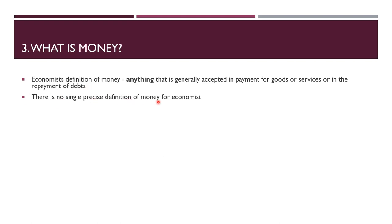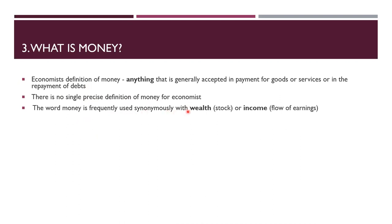There is no single precise definition for money for economists. The word money is frequently used synonymously with wealth, which is a stock, and income, which is a flow of earnings. There is a difference in economics between flows and stocks. A stock is something taken at a particular point in time. A flow is something measured per unit of time — you can think of income as someone's salary.